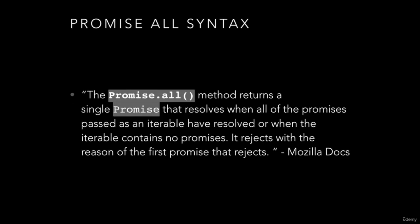In this lecture we'll talk about the promise.all syntax, and then start looking at arrays where we'll discuss map, reduce, and filter — functions that help you write cleaner JavaScript code. The promise.all method returns a single promise that resolves when all the promises passed as an iterable have resolved, or when the iterable contains no promises. It will reject if any of the promises reject, specifically with the reason of the first promise that rejects.